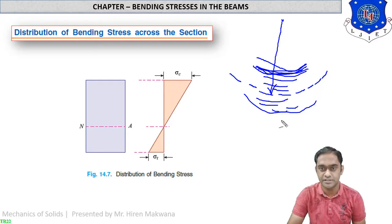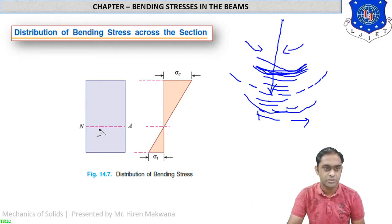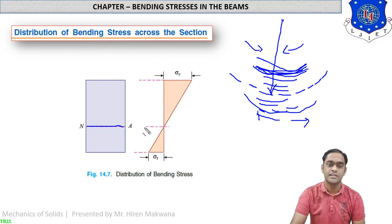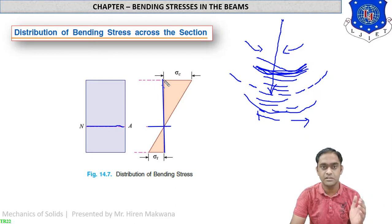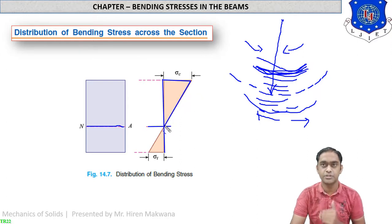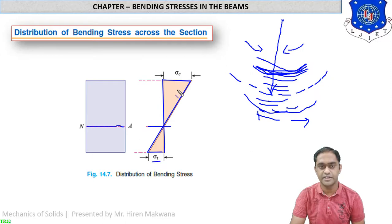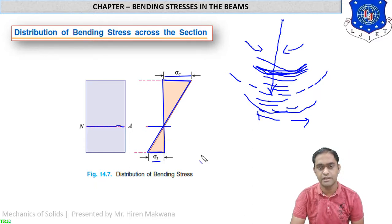From the bottom, the layers are subjected to tensile stress outward in both directions, while the compressive stresses are inward in both directions. For a rectangular beam section, above the neutral axis there is compressive stress on the right side of a vertical projection line, and below the neutral axis there is tensile stress on the left side. This is how the bending stress distribution diagram is drawn.